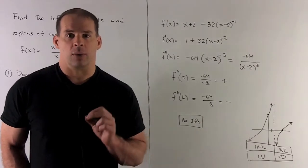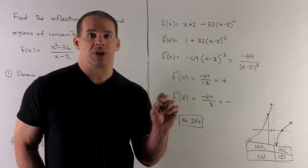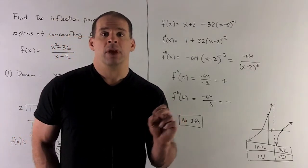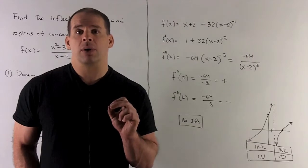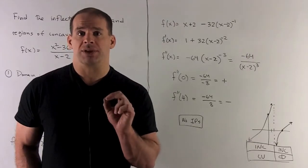Alright, let's take a look at what we have. So here, there are no points where our second derivative is equal to 0. The only place where we're dividing by 0 is at 2, but that's where our vertical asymptote is.